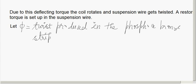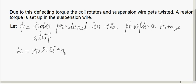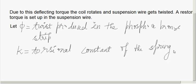Let phi be the twist produced in the wire or in the phosphor bronze strip. Let k be the torque per unit twist produced — that is, k is the torsional constant of the spring. You can also see this in the picture. Let phi be the angular deflection. At equilibrium, the deflecting torque will be equal to the restoring torque.